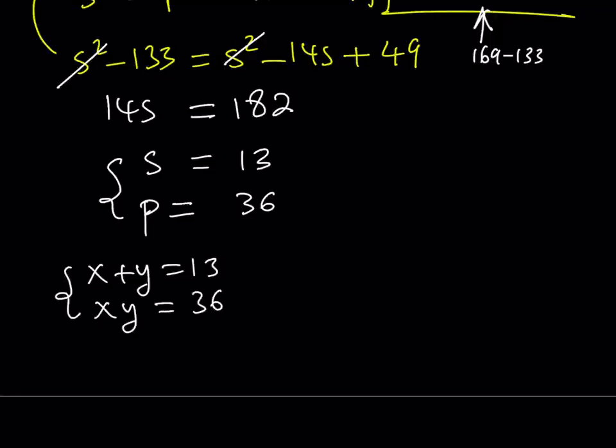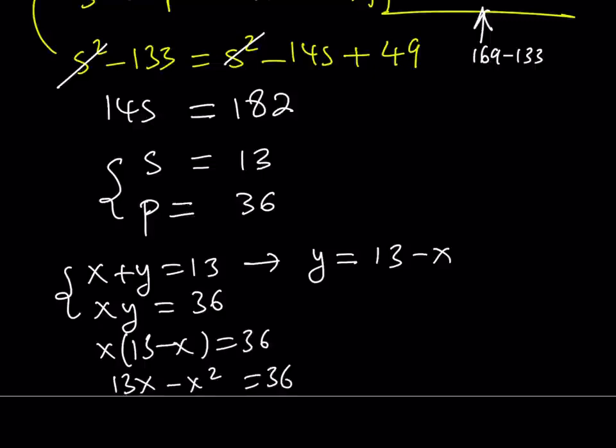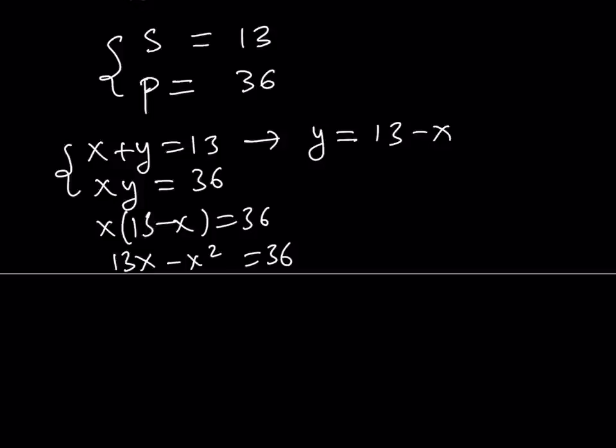Now, this is a system of equations that turns into a quadratic equation. For example, if you go ahead and replace y with 13 minus x, you get x times 13 minus x equals 36. And then by distributive property, you get the following. And put everything on the same side. Then you're going to be getting x squared minus 13x plus 36 is equal to 0. So you can proceed as follows and solve for x, and obviously for y as well.